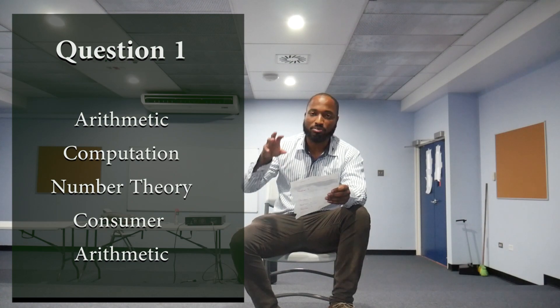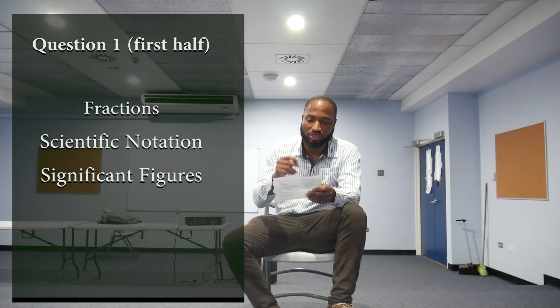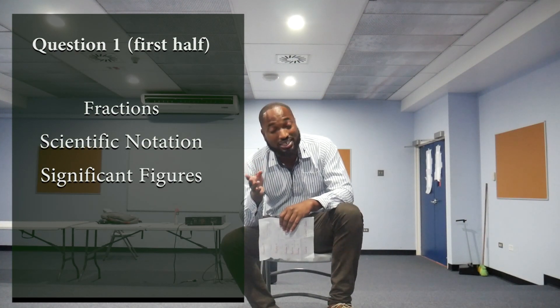Paper 2 is going to have 10 questions. The first question is going to be on arithmetic and consumer arithmetic. The number theory part of question one covers topics like fractions, use of calculators, scientific notation, significant figures, and there's a possibility they can bring in ratio in this question as well.